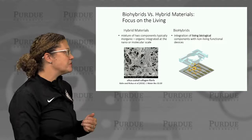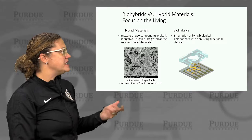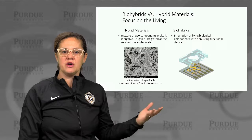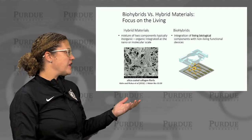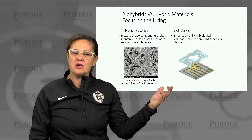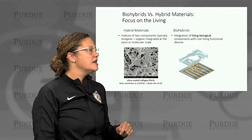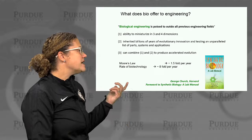To distinguish quickly: there is a field of hybrid materials, but when talking about biohybrids, we're really focusing on the living. A hybrid material brings two components — typically one inorganic, one organic — and integrates them at the nano and molecular scale, for example, silica-coated collagen fibers. What really distinguishes biohybrids is the integration of living biological components with nonliving functional devices.